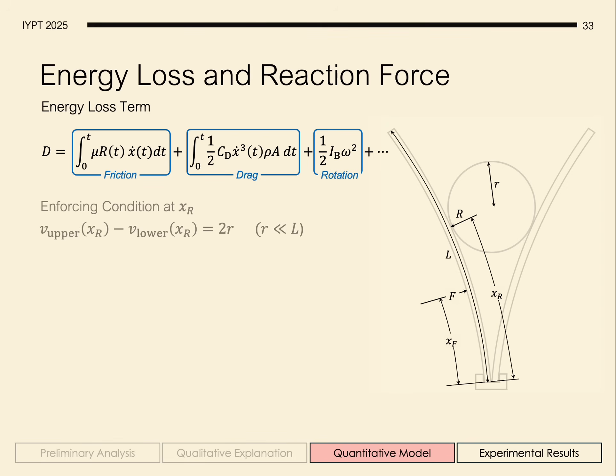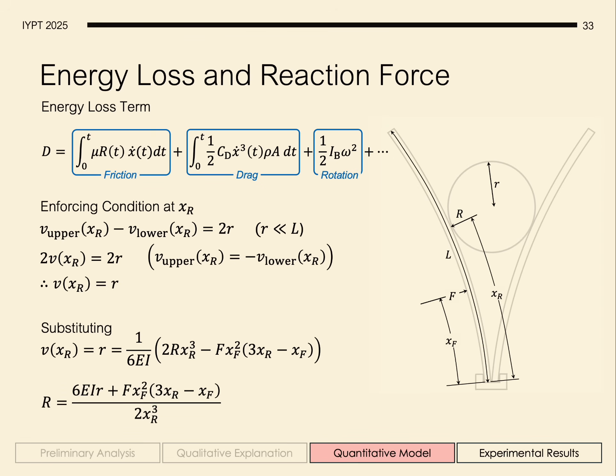And so we can also find the reaction force of the ball on the rulers by enforcing the condition that at the contact point between the ball and the rulers, the total distance between the deflection at xr between the upper and lower rulers is approximately equal to the diameter of our projectile. And since the deflection of the rulers is equal, we find that the deflection of one ruler is simply the radius. And substituting the value of x subscript r into our deflection equation, and equating that to the radius, we obtain our reaction force, which is big R.